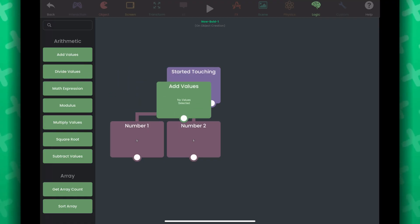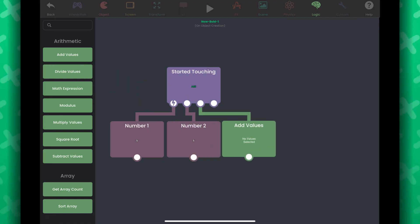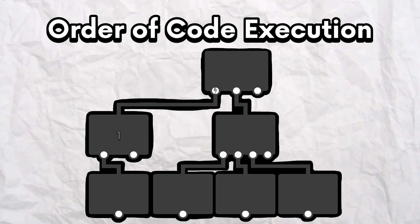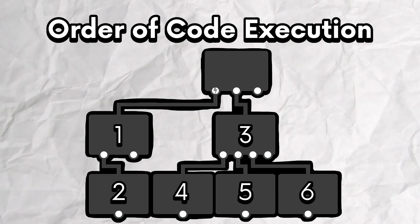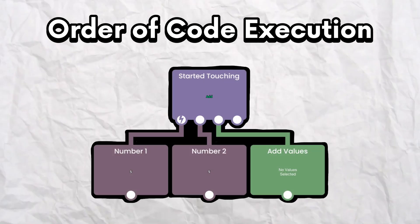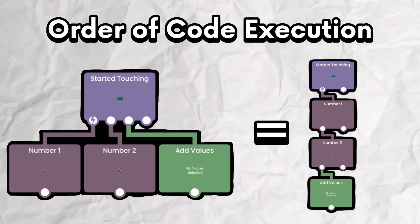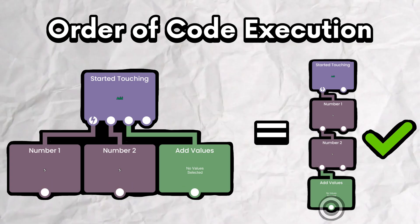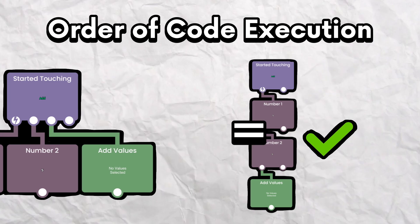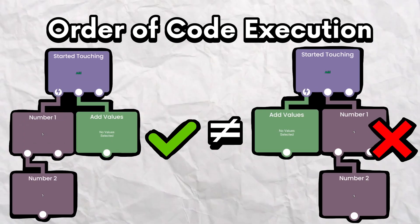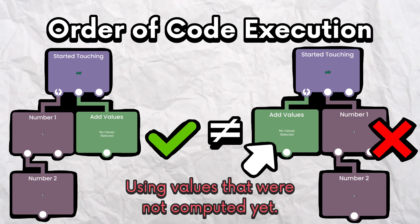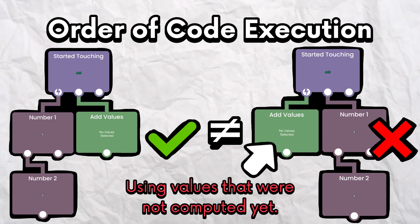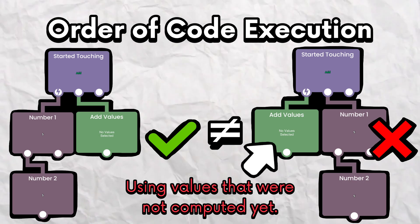Let's get an Add Values behavior and connect Started Touching to it. Note that the order matters here, because in Hyperpad, behaviors execute from top to bottom, then left to right. We can arrange behaviors in different ways and they'll work the same as long as none have a clock icon. But having addition happen before getting the values we need won't work — we want to make sure we get all the values before performing addition.